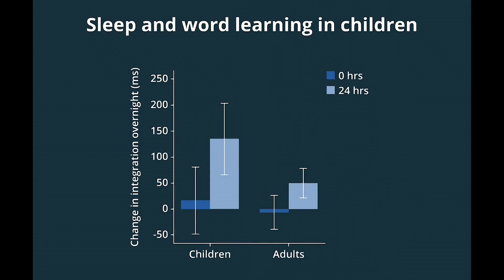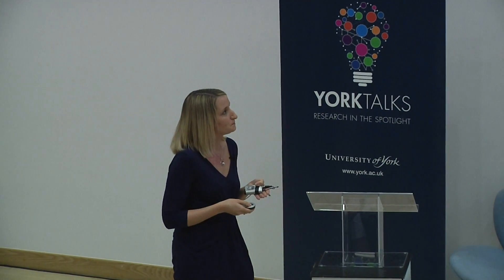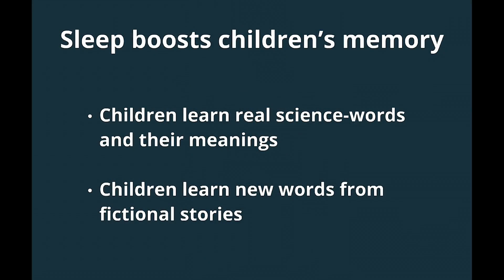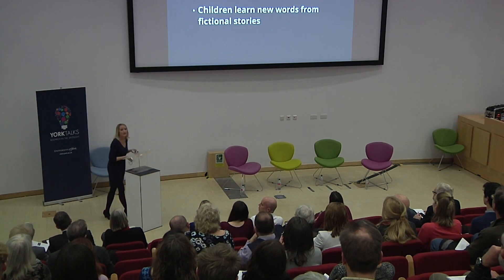We also have evidence that children show enhanced effects of sleep relative to adults — they show bigger overnight improvements. Children who are better consolidators — those who show bigger improvements in memory during sleep — also have bigger vocabularies. This suggests to us that sleep isn't just playing a role in strengthening memories overnight, but also has a longer-term effect of potentially improving vocabulary growth over time. We've shown similar sleep effects when training real science words from the national curriculum, and also when children are learning incidentally through listening to stories.